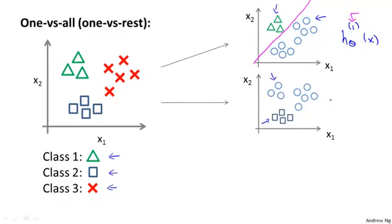And then we fit a second logistic regression classifier, and we call this h of x superscript 2, where the superscript 2 denotes that we're now doing this, treating the square class as the positive class. And maybe we get a classifier like that.